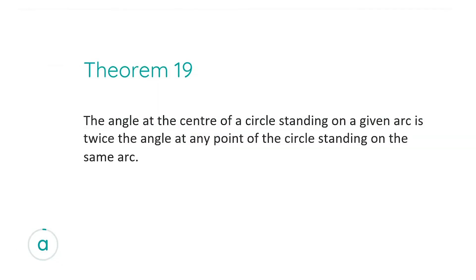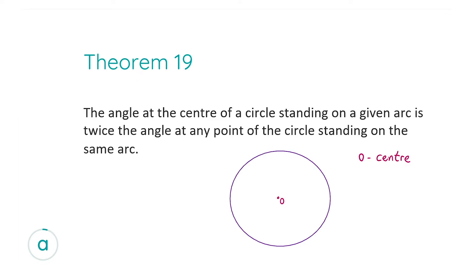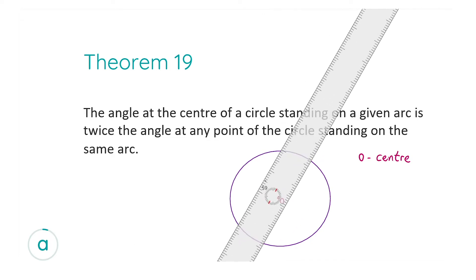Theorem 19 says: the angle at the centre of a circle standing on a given arc is twice the angle at any point of the circle standing on the same arc. I know that's very wordy so I'm going to do a quick sample now with a circle and centre O.